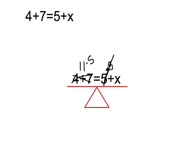These two 5s are going to cross each other off, and all I'm left with is my variable. 11 minus 5 is going to give me 6, so I know that this unknown variable x is going to equal 6.